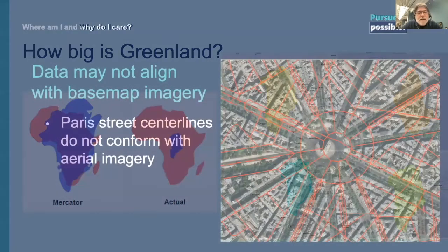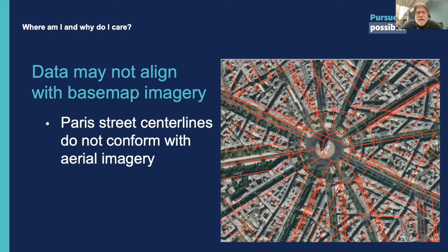Another issue we need to concern ourselves with is the alignment of information on our maps. This is a very important aspect of GIS, and if we don't get good alignment, we can have instances where analyses aren't correct or we're presenting imagery that doesn't make sense to the viewer. Here I've got an aerial image base map superimposed with Paris street centerlines, and it doesn't conform — there's a mismatch. When we combine different layers from different sources, we want them to align properly. Understanding the underlying geographic or projected coordinate system inherent to the data is an important aspect of properly using GIS.